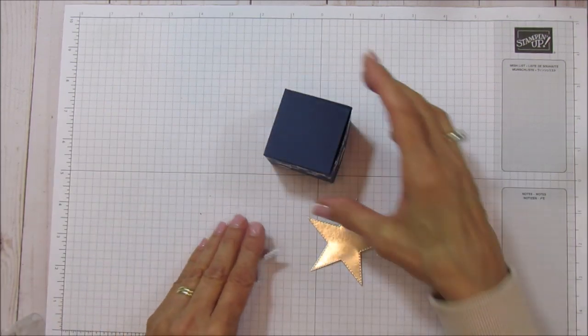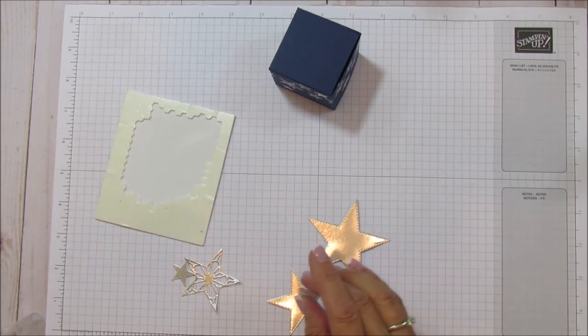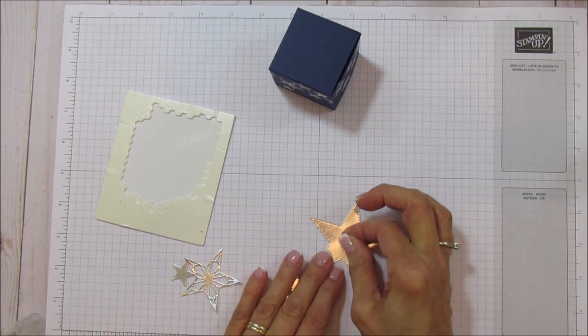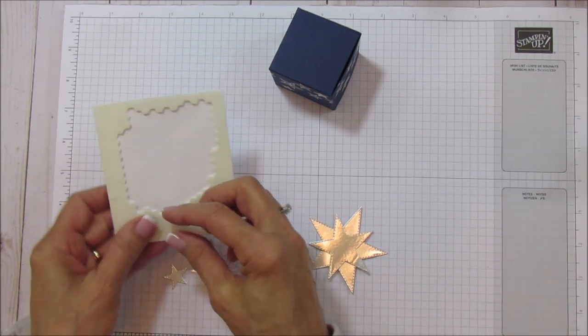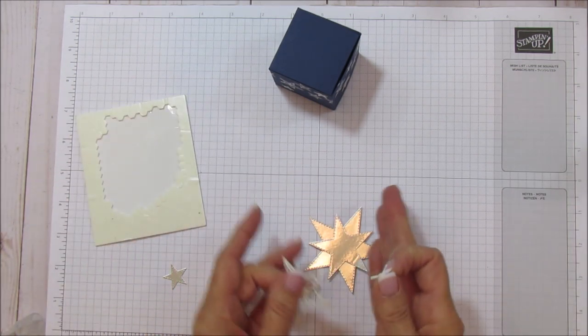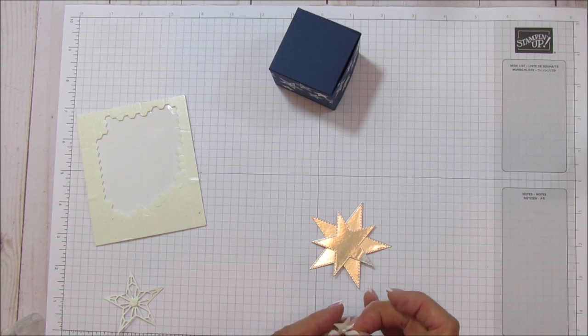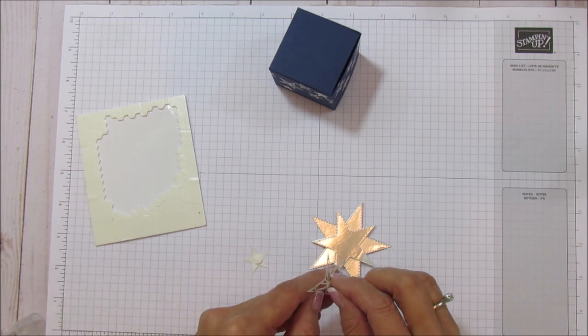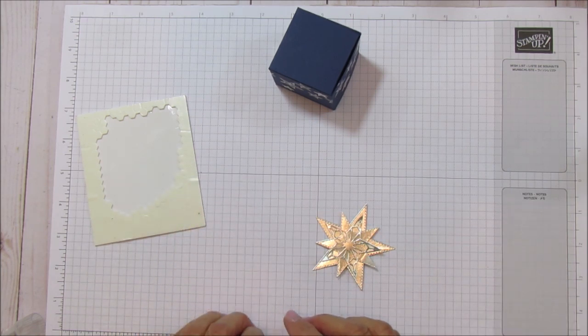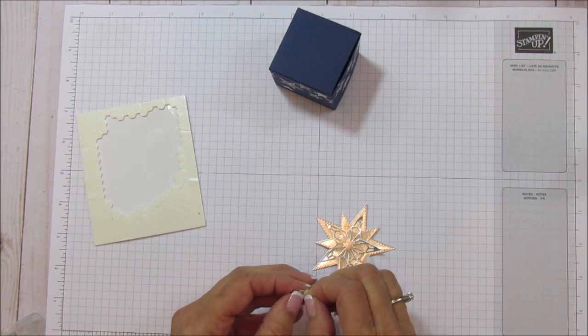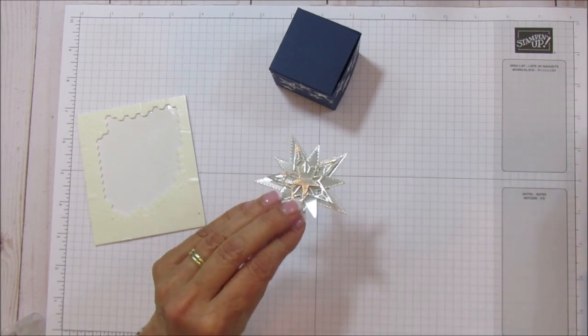Then we're going to take our stars here and we are going to layer these. I'm layering these with the mini dimensionals. I can use a big dimensional on that first one, but after that we need to use the minis. So I'm staggering these - I'm not layering them exactly on top of each other, I'm kind of staggering them; they're not exactly lined up. And then I'm just going to use a little bit of wet glue to put it on the top.